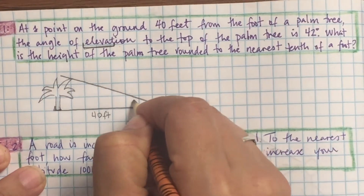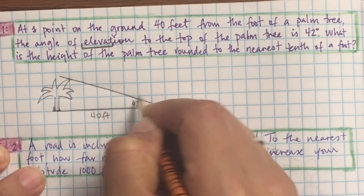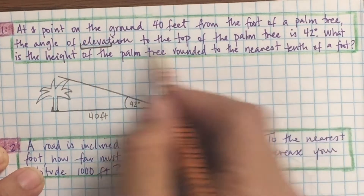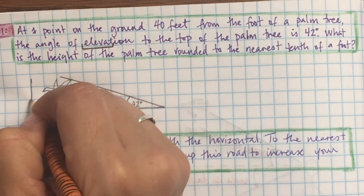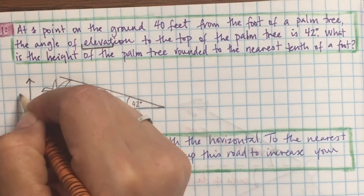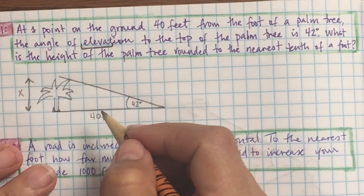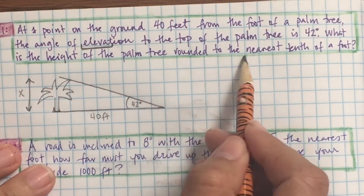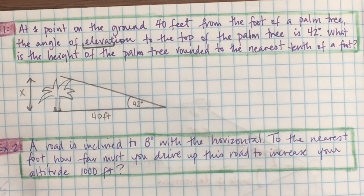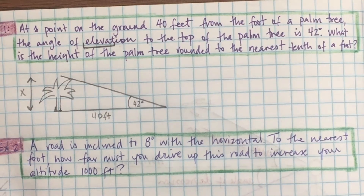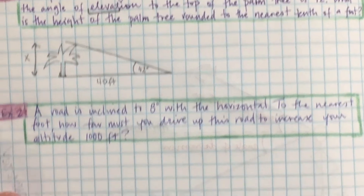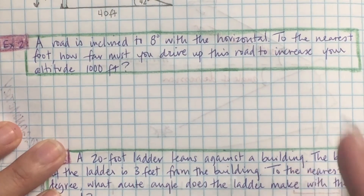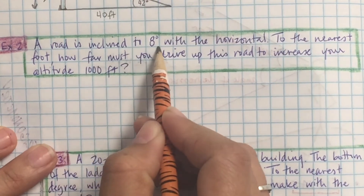I'm going to take my time on this video because if you can't break it down, you can't answer the question. What is the height of the palm tree? I drew a straight line up and down to figure out how tall the palm tree is, and I label it X, rounded to the nearest tenth of a foot. That's my triangle — always draw it first.